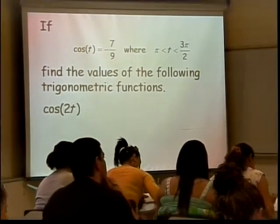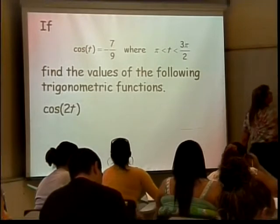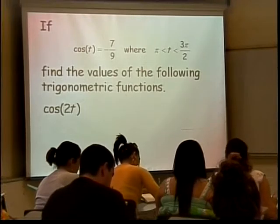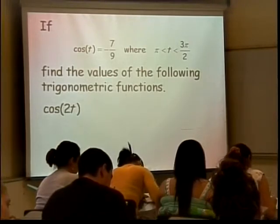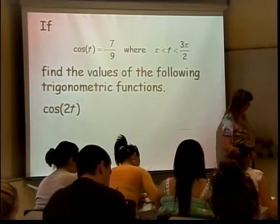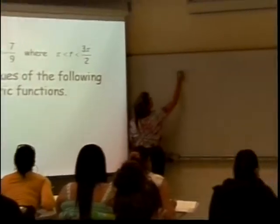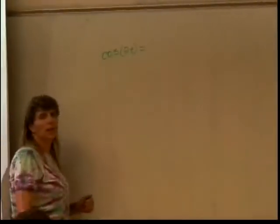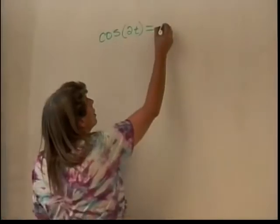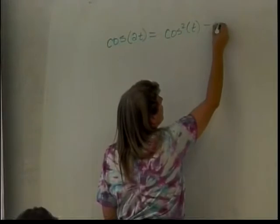Any suggestions for how to do this? There's an easy way and there's a little more complex way, depending on which version of the cosine of 2t you use. What was the identity for the cosine of a double angle — so 2a, or 2t in this case? In our case it's t, so it would be cosine squared of t minus sine squared of t.